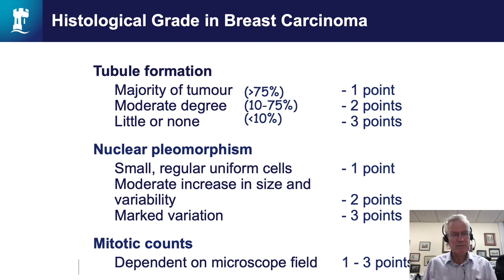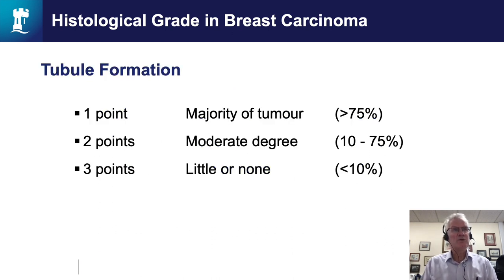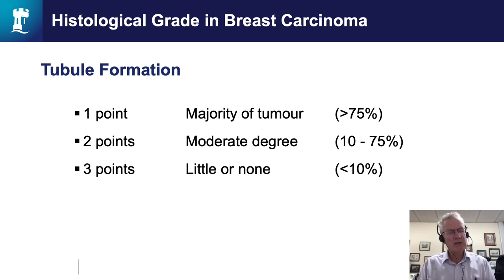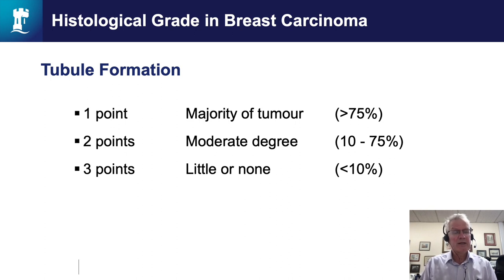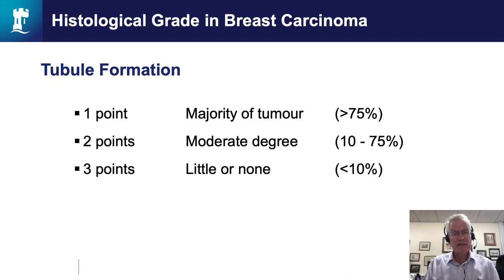For tubule formation: if a tumor is producing a lot of glands and tubules — that is, it looks close to normal — and that is present in over 75% of the tumor, it's allocated a score of one. If a tumor has little or no tubule formation, with less than 10% of the tumor forming glands or tubules, that's given a score of three. Let's look at some examples.